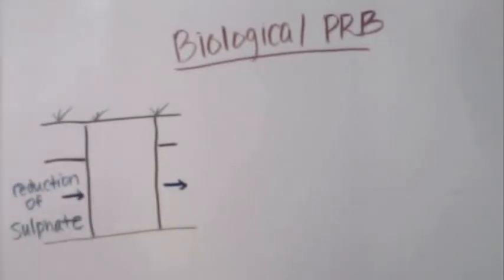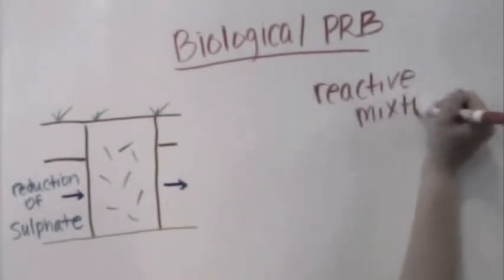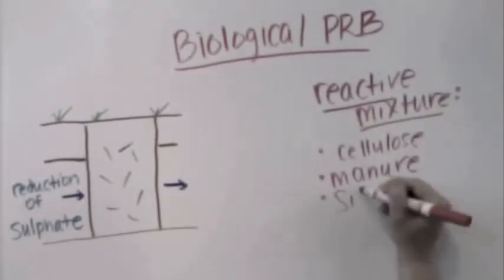While in the biotic treatment, mixtures including cellulose, manure, silica, and others are used to reduce the bacterial activity by forming metal precipitates.